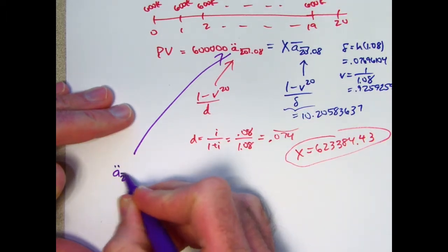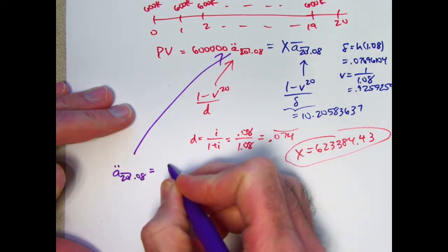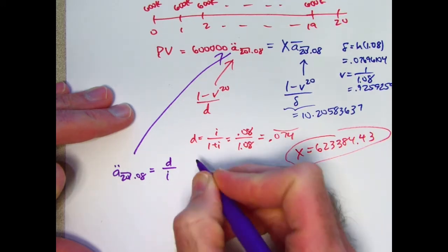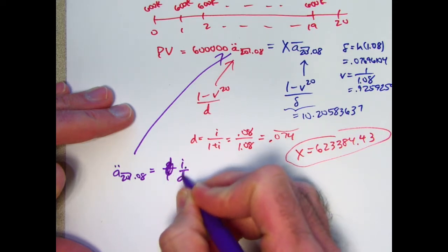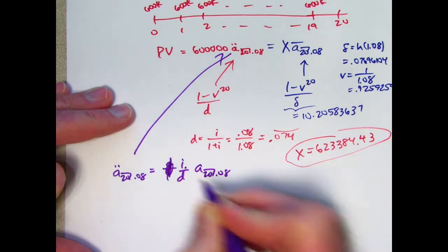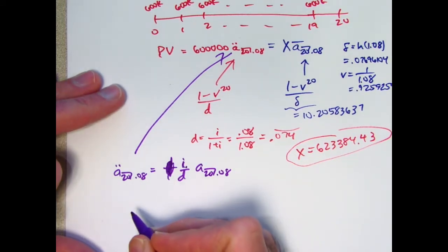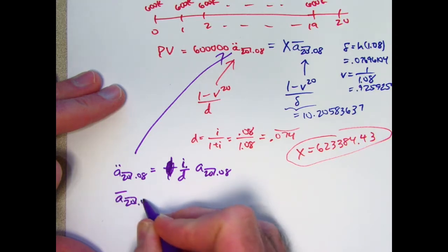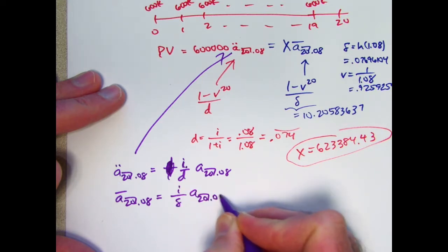i over d times a 20.08. And a similar relationship holds with a bar, except there's a delta instead of a d. a bar sub 20.08 is i over delta times a 20.08.